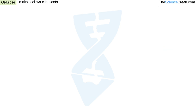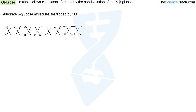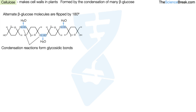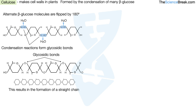Next let's take a look at cellulose. This makes cell walls in plants. It's formed by the condensation of many beta glucose molecules. An important point is that alternate beta glucose molecules are flipped by 180 degrees, as shown in the diagram. We have condensation reactions forming glycosidic bonds, making a chain of beta glucose molecules, and we can simplify this diagram to show a straight chain.